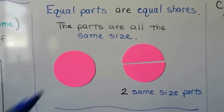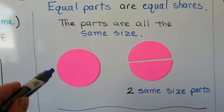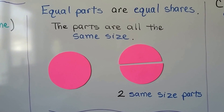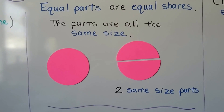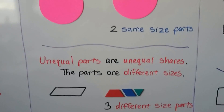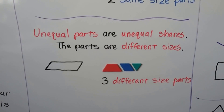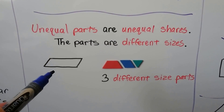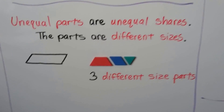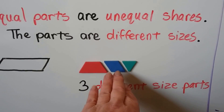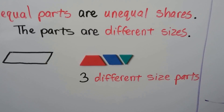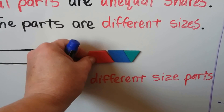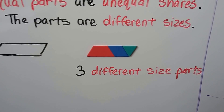So we have a circle. We can draw a line through the middle of it and make two same-size parts — they'll be equal parts. Unequal parts are unequal shares; the parts are different sizes. Here we have a parallelogram, and if we use a trapezoid, a rhombus, and a triangle, you can see that they'll make a parallelogram, but then all the parts are different sizes.